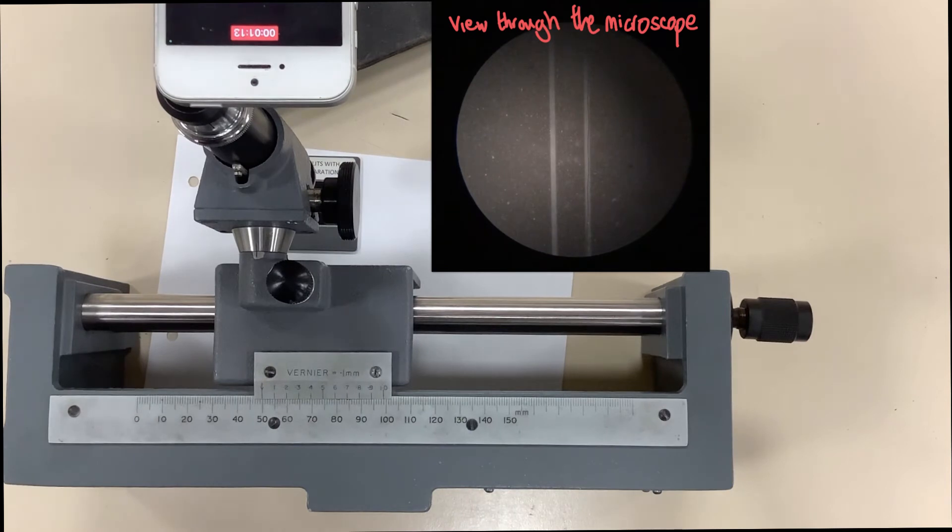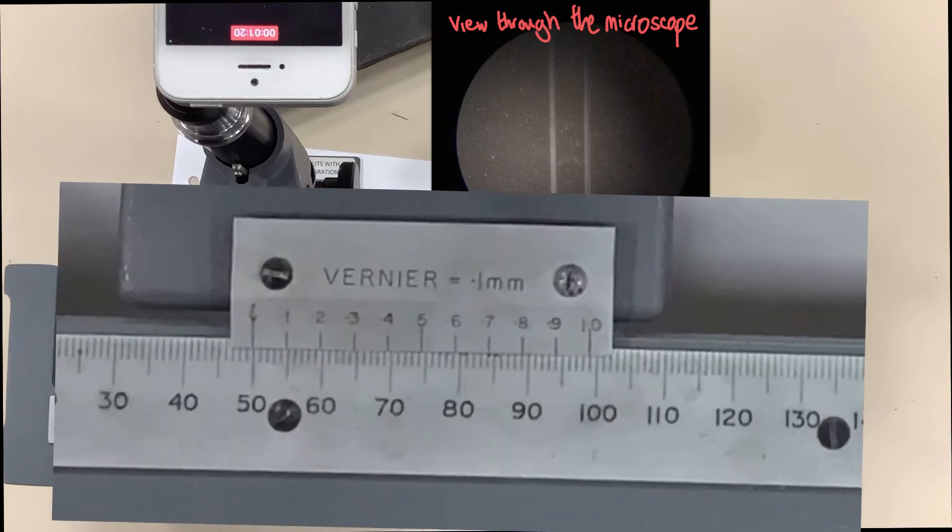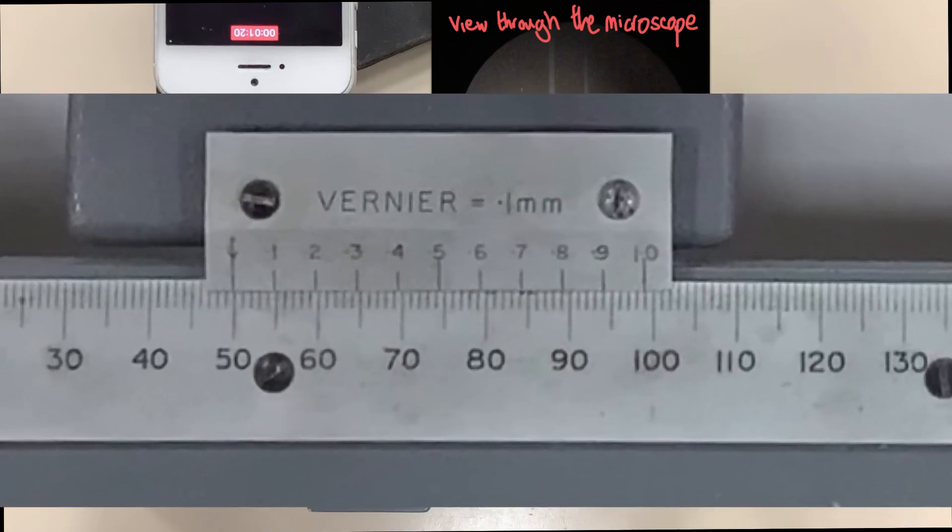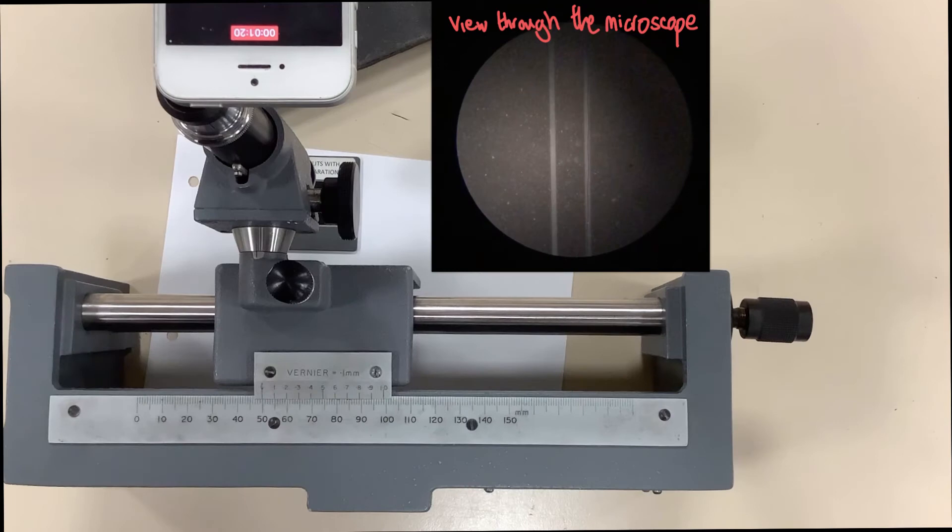Once we have done that we need to read off the vernier reading from the scale here. So let's zoom in on the vernier scale to give you a chance to try and read what you think the vernier scale is saying at the moment. And now that you've had a chance to do that, let's continue the video.